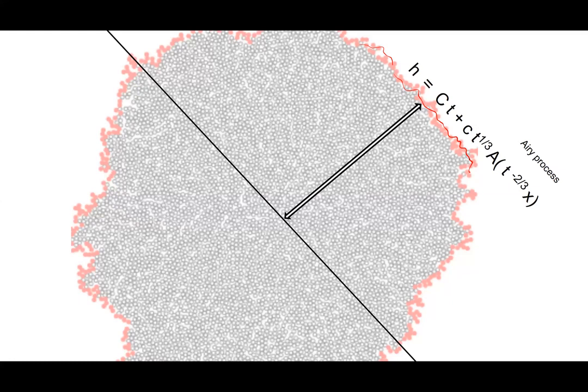For models like this, we know essentially nothing except that there's some large c and it's growing at that rate. The best anyone knows about models like this in two dimensions — things like first passage percolation — is that the fluctuations are somewhat less than t^(1/2) by some logs. One simplification we can make is to look at directed models.